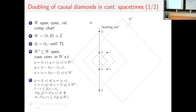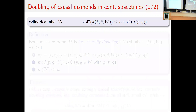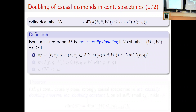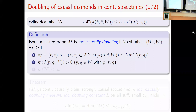These neighborhoods can be chosen arbitrarily small and inside a globally hyperbolic neighborhood, where the volume of the doubled diamond is bounded above by the volume of the original diamond times a constant depending only on the neighborhood. This leads to defining a Borel measure as locally causally doubling if in all cylindrical neighborhoods there exists a constant L such that for all p, q differing only by the time component, the measure of the doubled diamond is bounded above by L times the measure of the original diamond, the diamond has positive measure if the points are time-like related, and the neighborhood has finite measure.